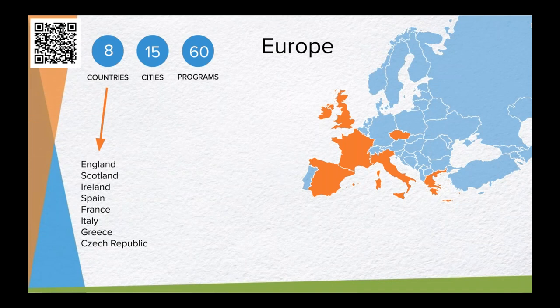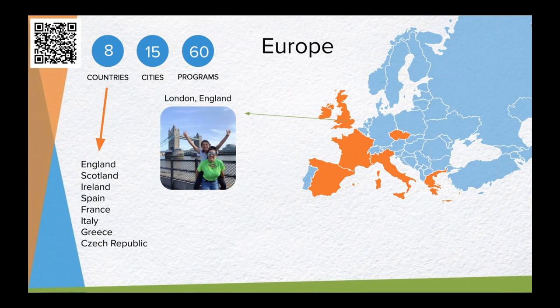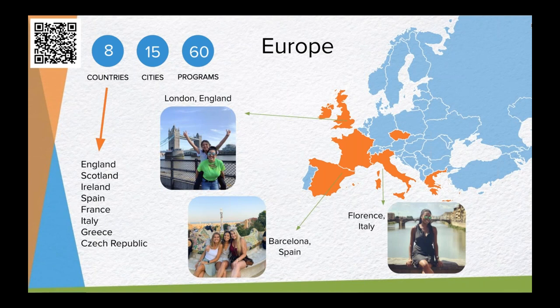In Europe, we offer 60 programs in eight countries. For example, we have programs at two different universities in London that give you pretty different experiences of London. In Barcelona, you can participate in a Barcelona bucket list, which allows you to immerse yourself in the culture with fun activities scattered throughout the entire city. One of our most popular programs in Europe is our semester program in Florence, Italy, where you'll study at the Florence University of Arts, offering courses from art and design to communications, business, and natural and social sciences. You also have the option to join a one-week traveling course for an immersive cultural introduction to Italy.